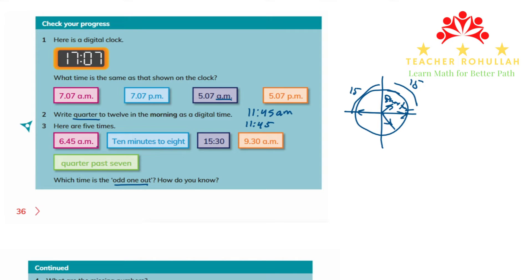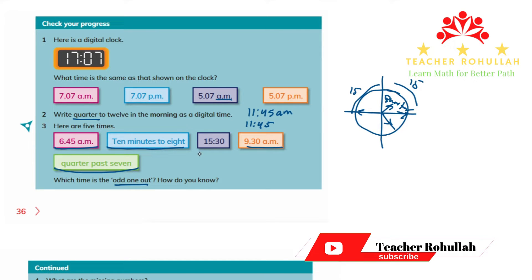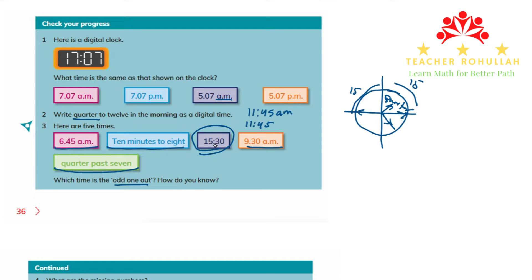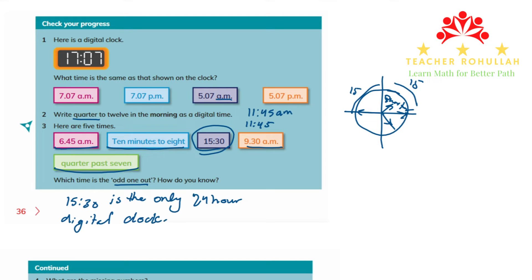Looking closely: 6:45 a.m. and 9:30 a.m. show morning time. 10 minutes to 8 and quarter past seven don't specify morning or afternoon. But 15:30 is specifically showing afternoon time. The other reason 15:30 is the odd one out is that it is the only 24-hour digital clock format. So the answer is 15:30.